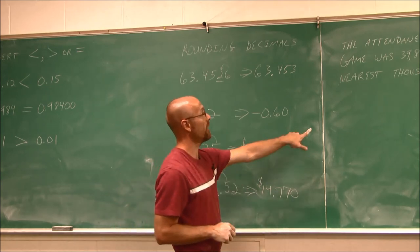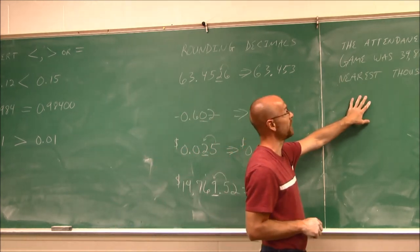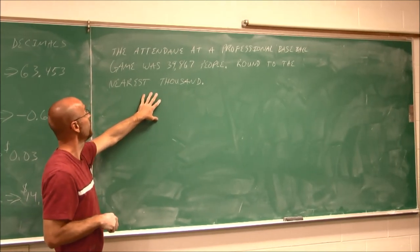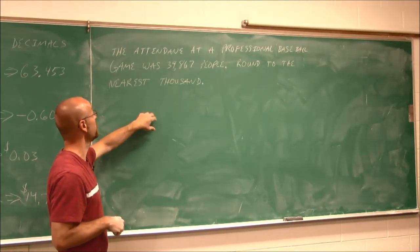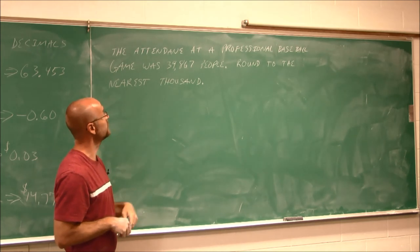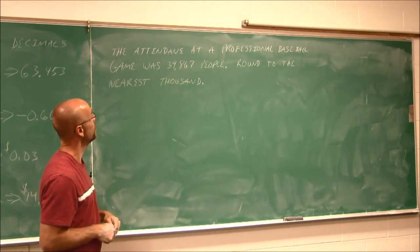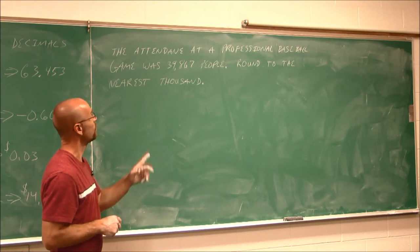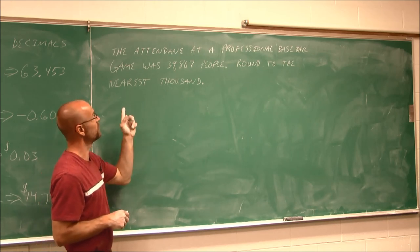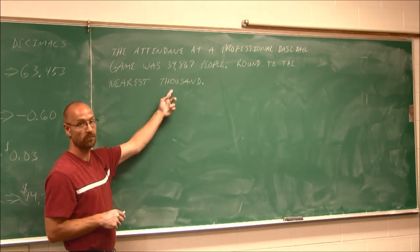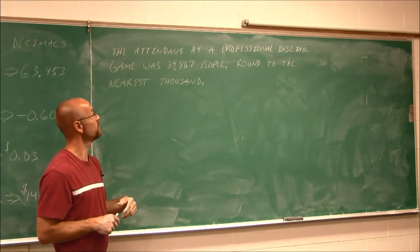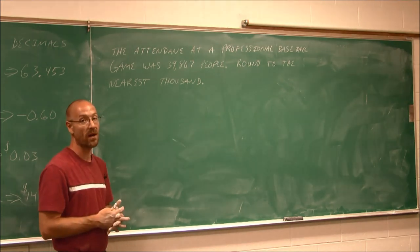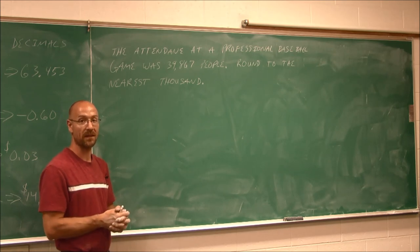One last example — I'm going to have you do this one on your own. It says the attendance at a professional baseball game was 39,867 people. Round this number to the nearest 1,000. Give that a shot. Hopefully you're comfortable with rounding — the more practice, the better you'll be. Thank you for watching.